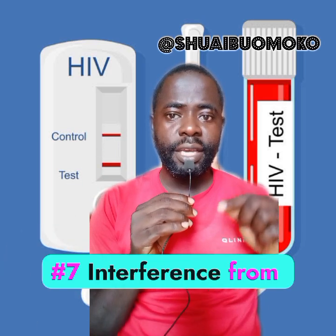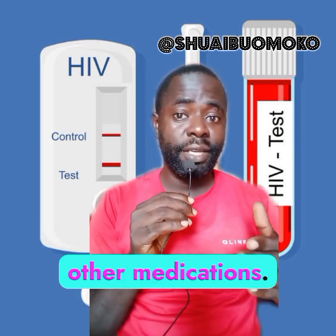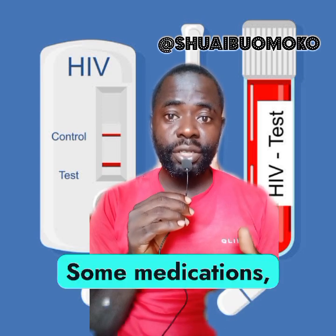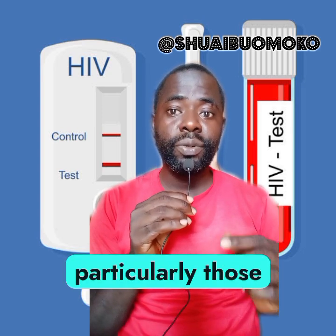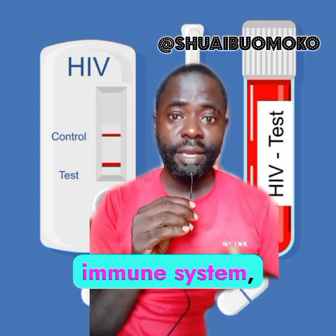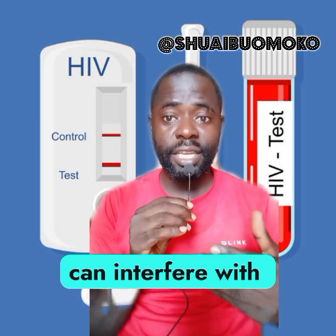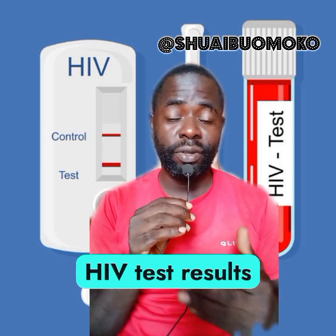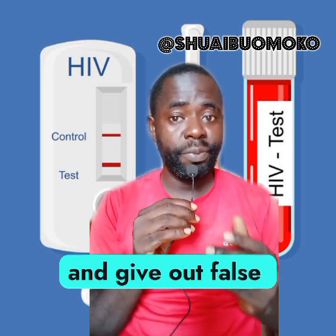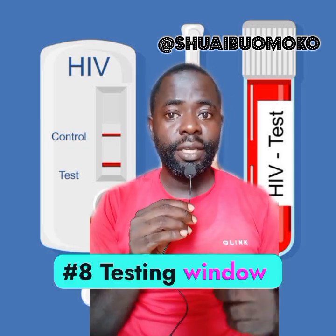Number seven: interference from other medications. Some medications, particularly those that affect the immune system, can interfere with HIV test results and produce false positive results.